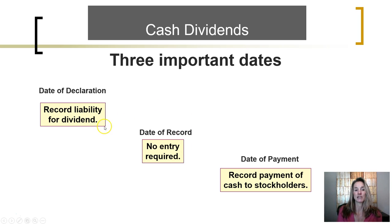The first is the date of declaration. On the date of declaration, the Board of Directors announces that the corporation will be paying a dividend. On the date of declaration, we need to record a liability for that dividend.